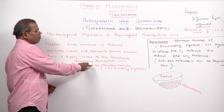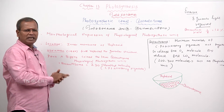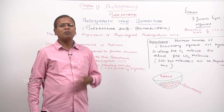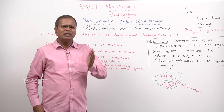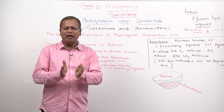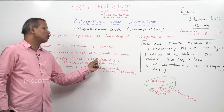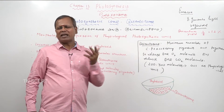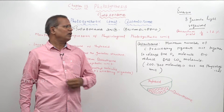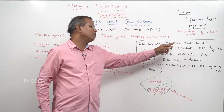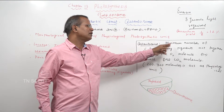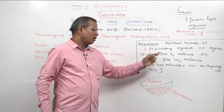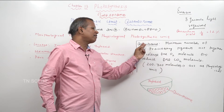One Quantosome is made up of 230 chlorophyll molecules. If you get a quantosome, a quantosome will contain 230 chlorophyll molecules. What is the quantosome? The minimum number of chlorophyll and accessory pigments that act together to release one molecule of oxygen or reduce one molecule of carbon dioxide is said to be quantosome.